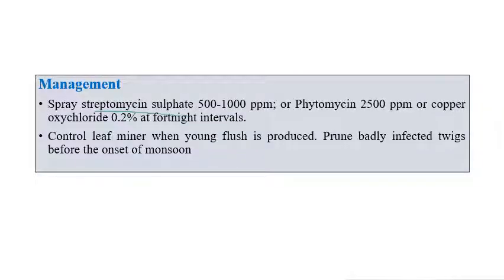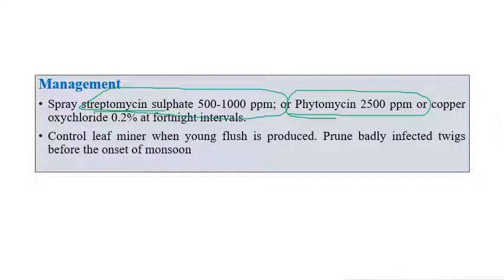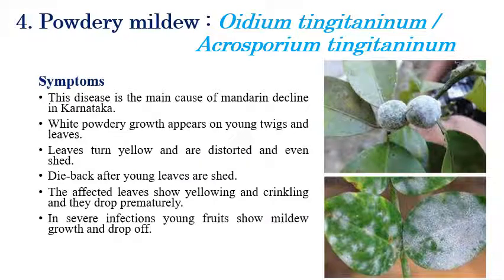For management of citrus canker, spraying streptomycin sulfate at 500–1000 ppm, phytomycin at 2500 ppm, or copper oxychloride 0.5% at fortnightly intervals is recommended. Since it is a bacterial disease, streptomycin sulfate is recommended. Control of leaf miner is also important, along with pruning of affected leaves and twigs. Spraying insecticide along with a fungicide can give better control.